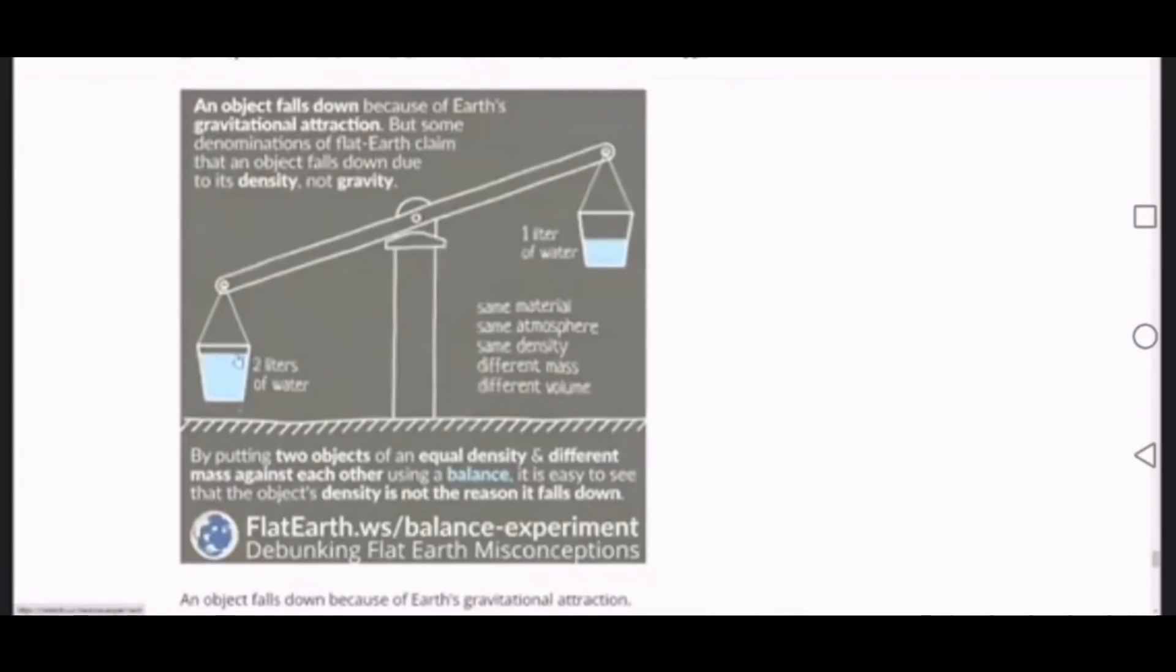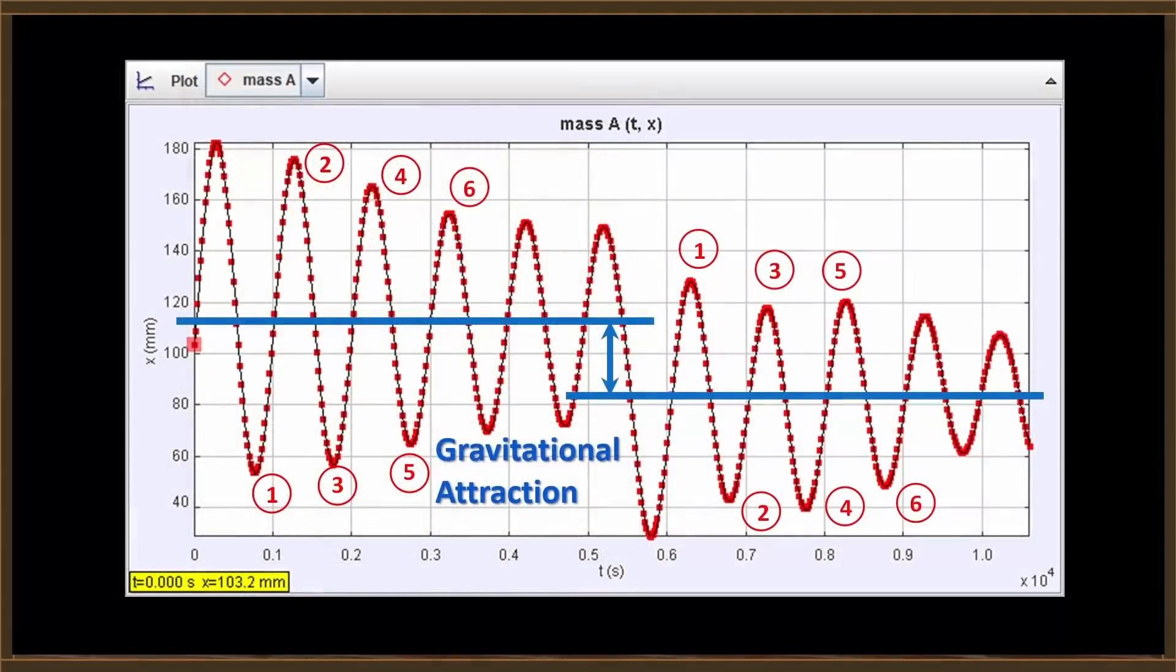So here, from the flatearth.ws website, it says an object falls down because of Earth's gravitational attraction. Well first of all that's wrong. There is no attraction. In mainstream consensus today, it's actually an object following a geodesic or following the bending of space-time. We know that gravity is simply objects moving through curved space-time, but that doesn't stop it from acting like a force and appearing to be a physical attraction. There's nothing wrong with thinking about it that way.